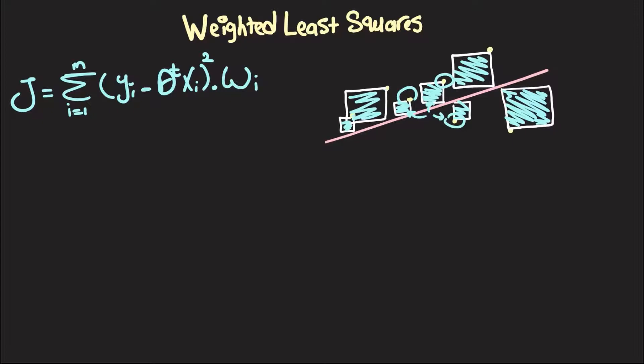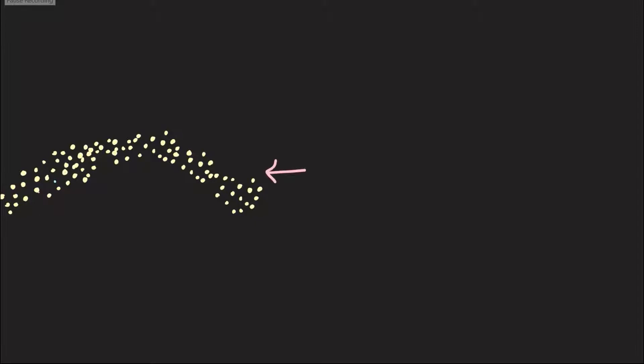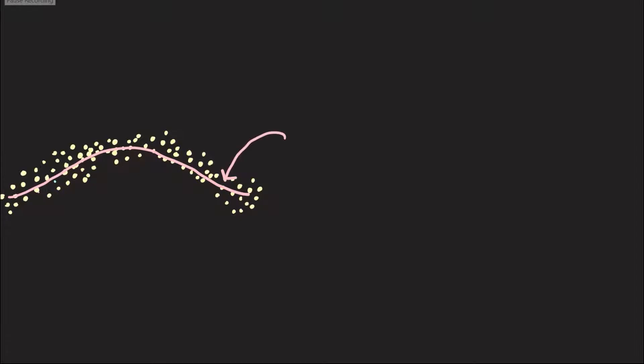One scenario where this proves very useful is when our dataset does not follow a linear trend. If we try applying ordinary least squares, we might end up with a terrible fit, because what the data originally follows might be something non-linear. You could achieve a good fit using a neural network, but let's see how weighted least squares can help us overcome this.